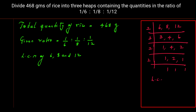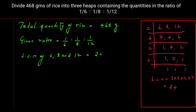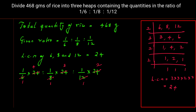The LCM is equal to 2 × 3 × 2 × 2, which equals 24. Now we multiply each part of the ratio by the LCM: 1/6 × 24 = 4, 1/8 × 24 = 3, and 1/12 × 24 = 2. So the simplified ratio is 4 : 3 : 2.